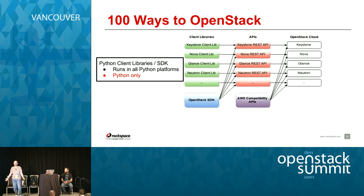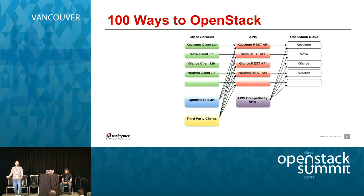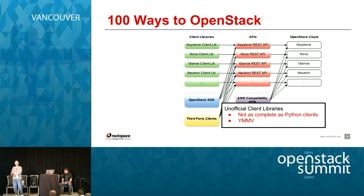The OpenStack SDK goes through the same REST APIs, but it's a unified client. If you're using Python, this is a fairly good option. But Python is not the whole world — if you're not using Python, this is a no-go. There are also third-party clients, unofficial clients created by the community, which expose REST API wrappers for different languages and platforms. They usually lag behind the official support, so your mileage may vary.